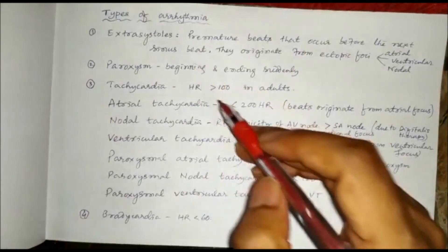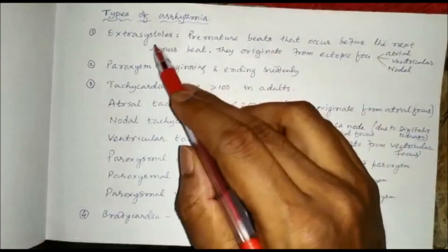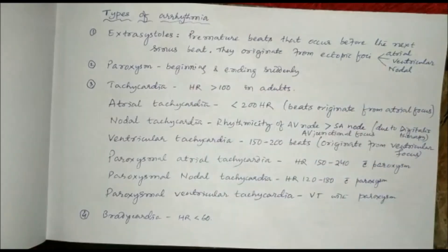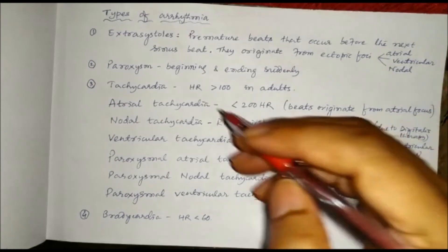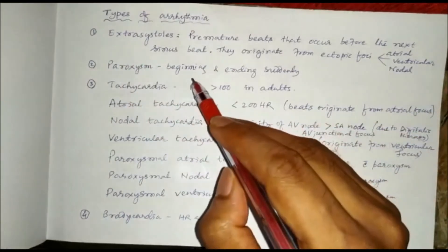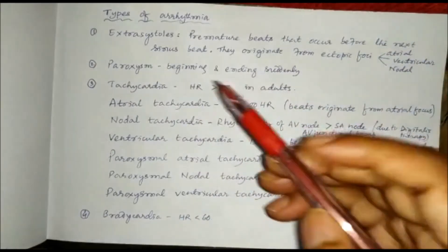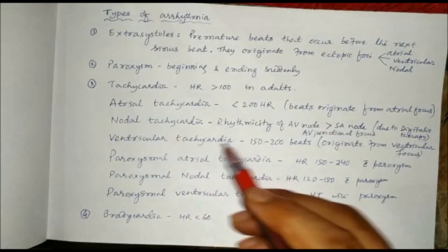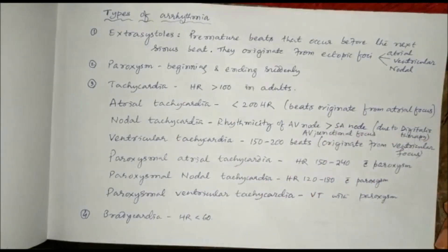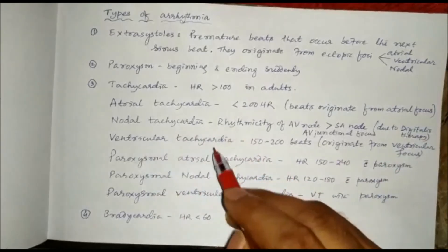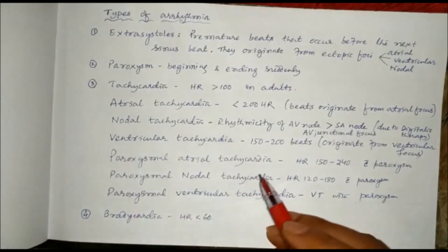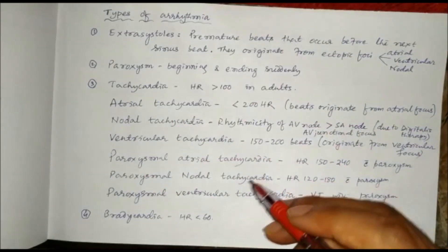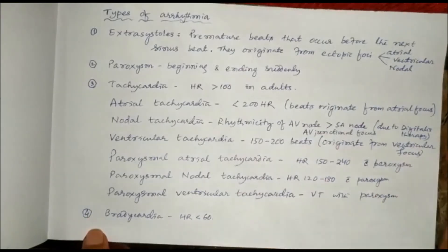Now let us see the types of arrhythmia. There can be extra systoles — if some premature beats originate from the ectopic focus, they are called extra systoles, and they can be in the atrium, ventricle, or nodal. When we use the word paroxysmal, that means it is beginning and ending suddenly. There can be tachycardia when the heart rate is more than 100 — it can be atrial tachycardia, nodal tachycardia (where the rhythmicity of AV node is greater than the SA node), or ventricular tachycardia.